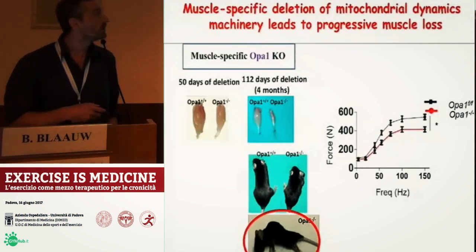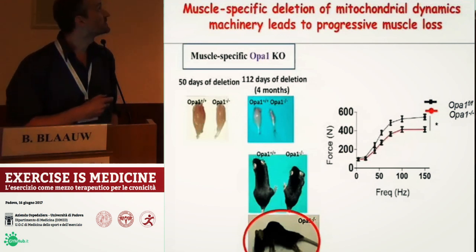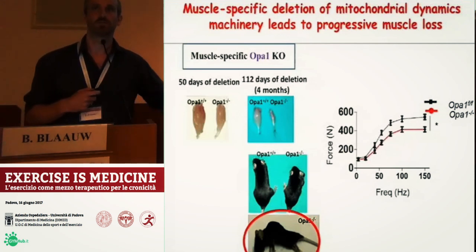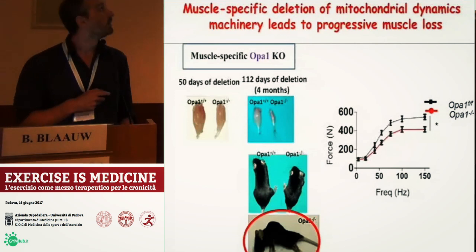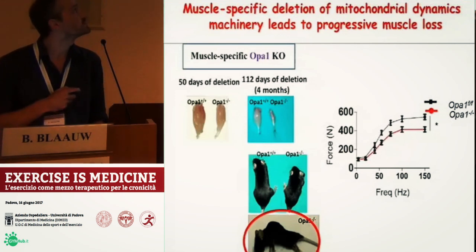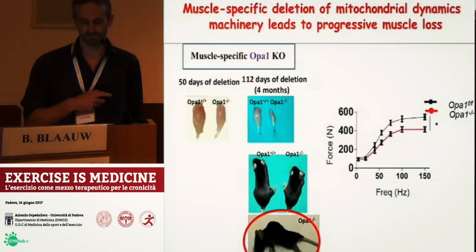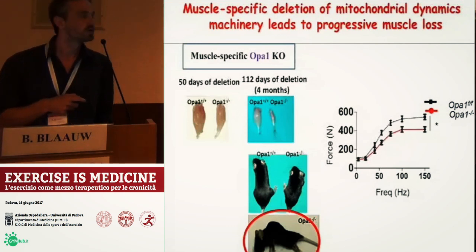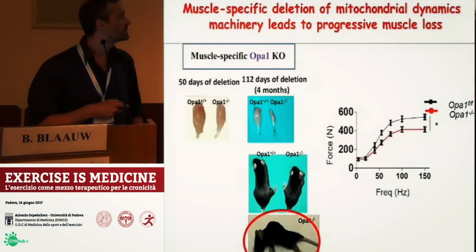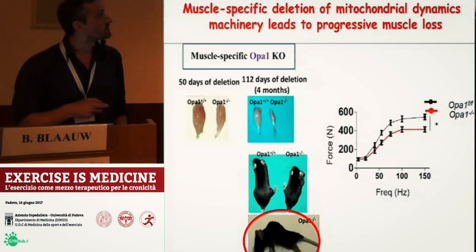When we look at the muscles after we delete OPA1 from adult skeletal muscles, we actually see that there is a progressive muscle atrophy. Here you can see a normal tibialis anterior of the mouse, and when we take out OPA1 after 50 days — about two months — the muscle is already a little bit smaller. After four months the muscle is almost completely absent. We can also see this when we look at the animals: the animals are much smaller and they develop typical signs of muscle weakness, kyphosis, which occurs in many mouse models of muscle weakness.